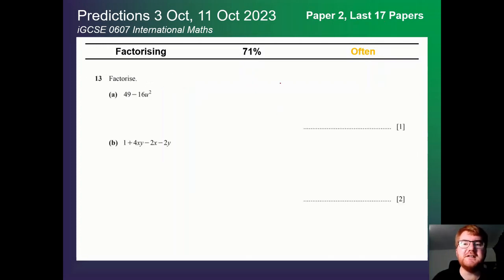On to factorising. Again, also an often topic here at 71%. Usually far more marks available and usually on the harder side. So you can see you have to use your difference of two squares, the splitting the term idea, to really get all the marks on these paper two-style questions.